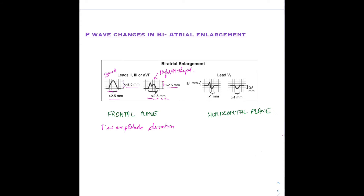In lead V1, there will be a biphasic P wave morphology — a combination of both right and left atrial enlargement changes. In right atrial enlargement there is peaking of the upright portion of the biphasic wave, which is exactly what we see here. In left atrial enlargement, the inverted component becomes bigger — more than 1 mm in depth as well as duration.